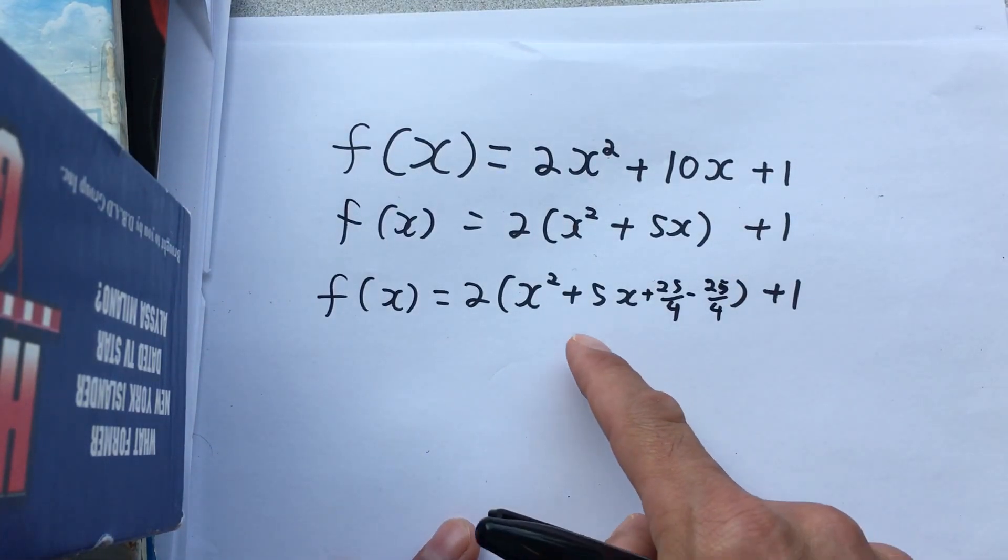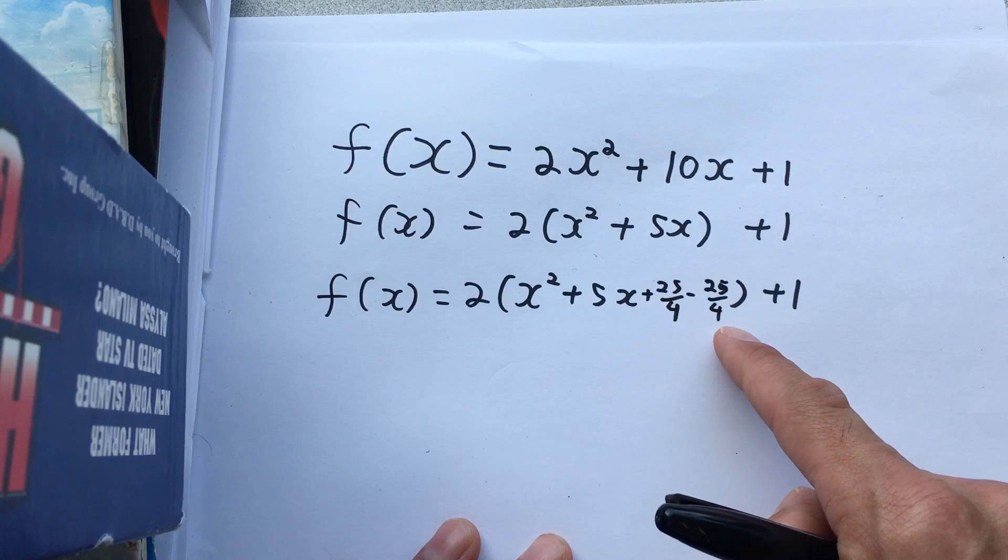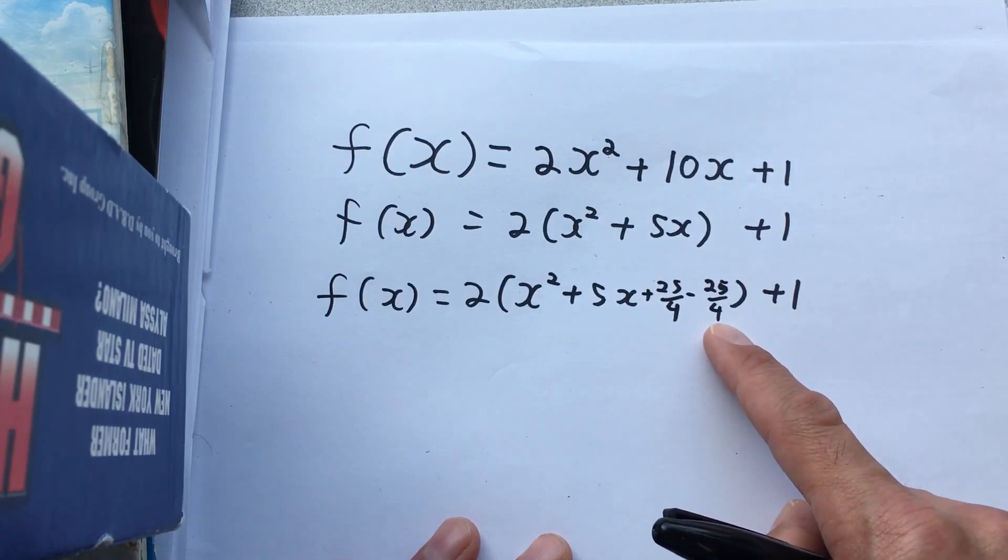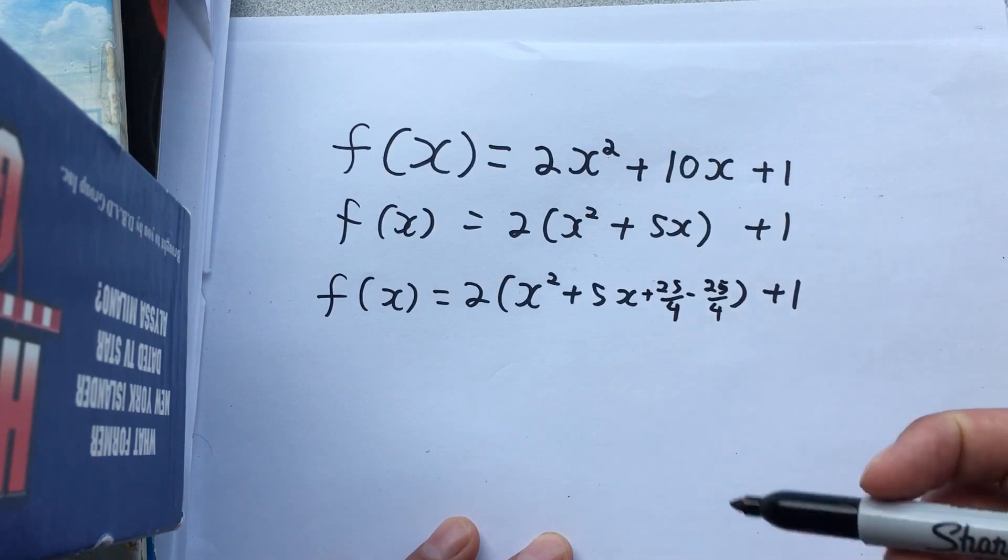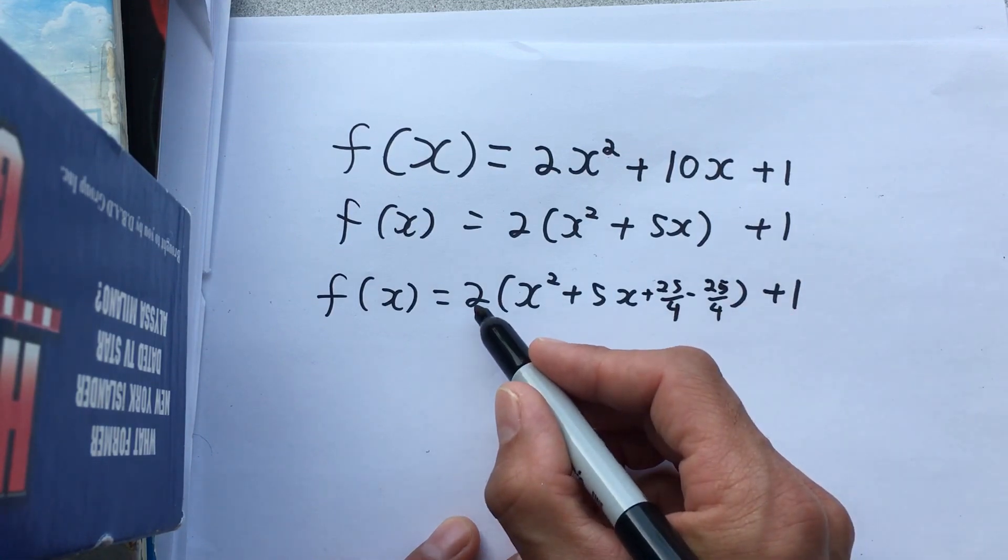Now to clean things up, I want nothing but my perfect square inside these brackets, so I'm going to pull the 25 over 4 out. That is the negative 25 over 4. However, by virtue of being inside these brackets, it's being multiplied by 2.